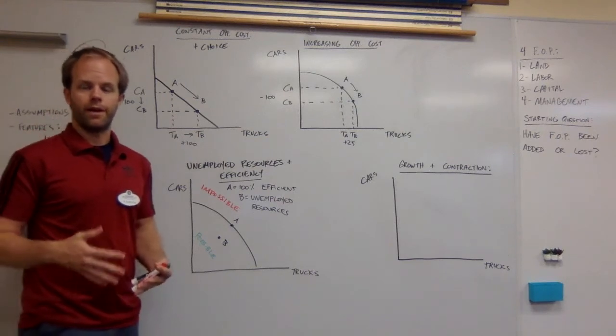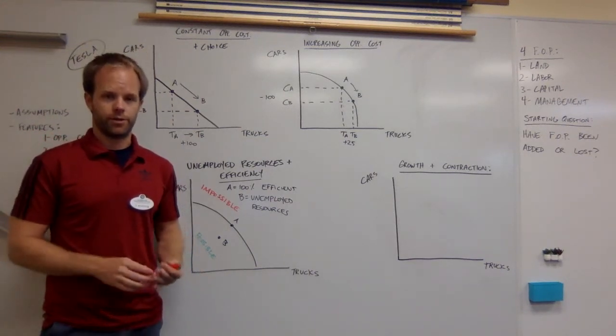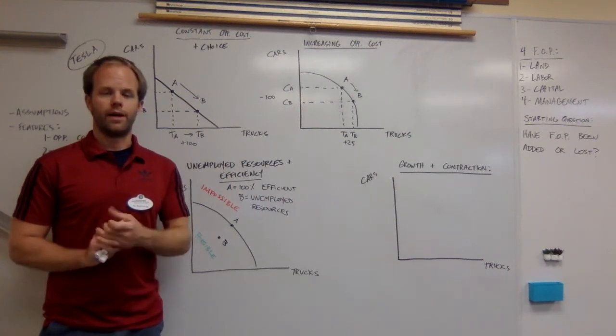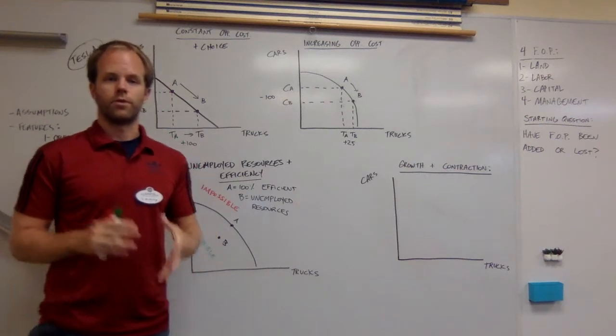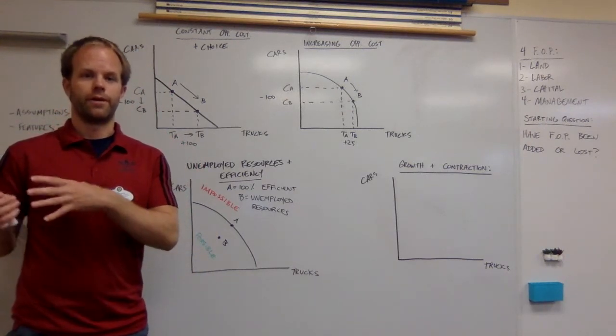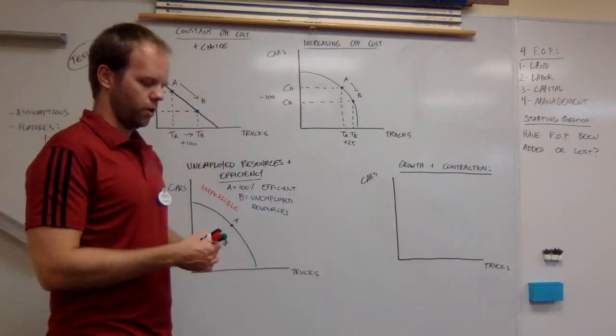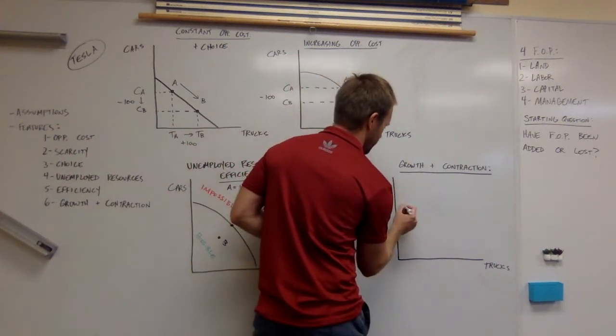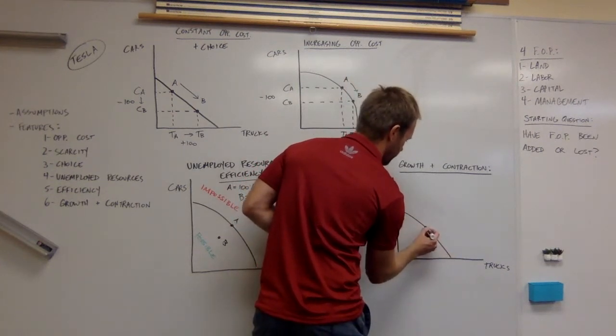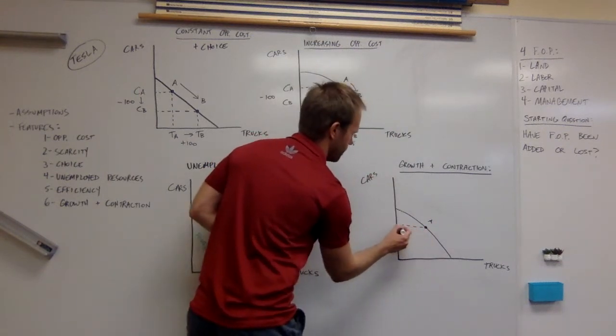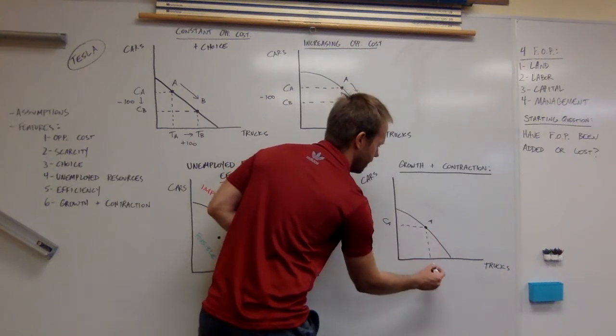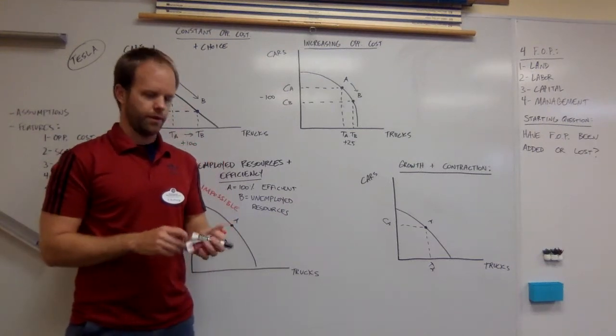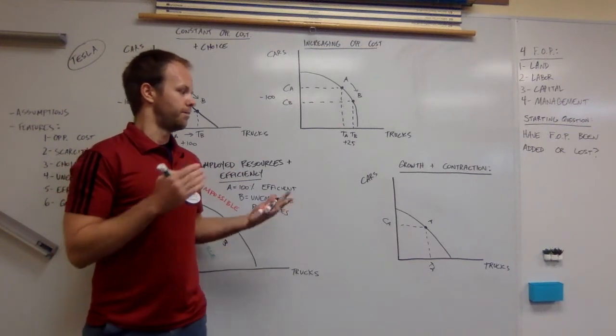Tesla is a company that has been growing like crazy the past 10 years. They've added a lot of land, they've bought a lot of new factories, they've added a whole bunch of new workers, and they've added a lot of machines and different things to help them make their very capital intensive products. We are going to show that Tesla can expand as a business. We're going to start with an initial PPC with a point A. This is CA, the number of cars produced at point A, the number of trucks produced at point A. Now, Tesla has been expanding.